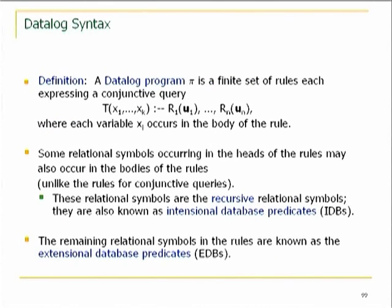So what is a Datalog program? It's basically a finite set of rules that express conjunctive queries. The only difference is that before, when we had a single conjunctive query, we had a name for the head that did not appear in the body. Here, some names in the head may also appear in the body — and that's where recursion comes into the picture. Some predicates occur both on the left and the right — these are called intentional database predicates or recursive predicates (IDBs). The ones that occur on the right but not on the left are extensional (EDBs) — the given predicates in the database.